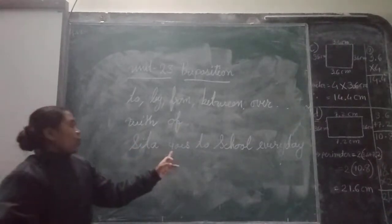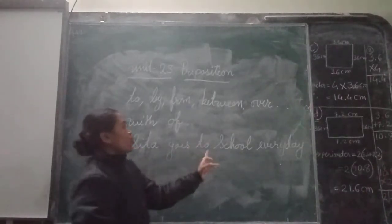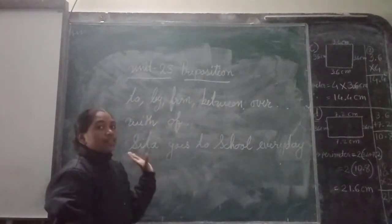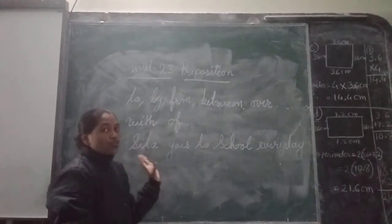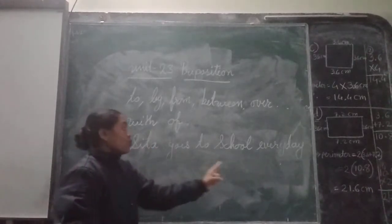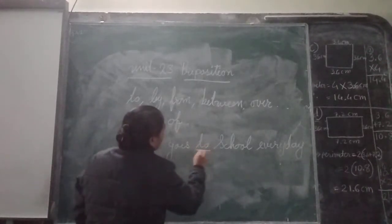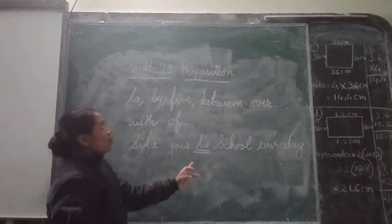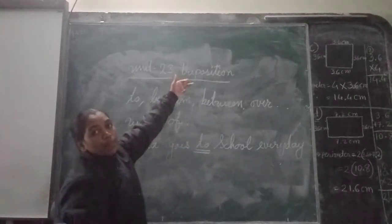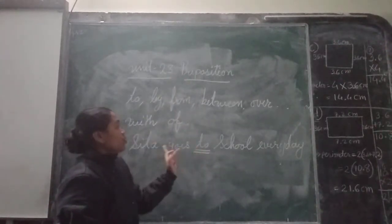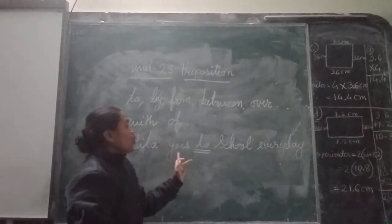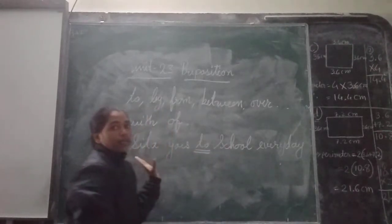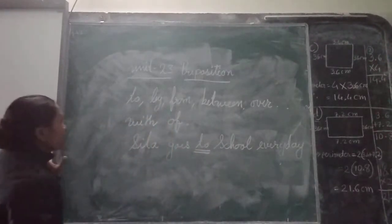See here — 'Sita goes to school everyday.' Sita kaha ko jaati hai — Sita goes to school everyday. 'To' is the preposition. Jho do sentence ko jodne ka kaun ka raha hai.